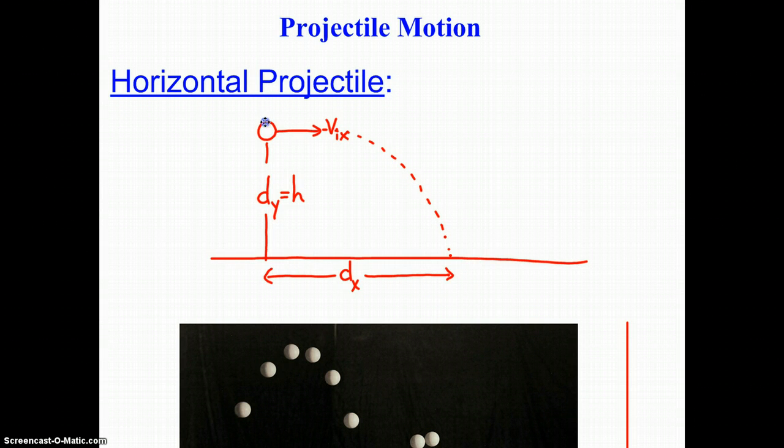The distance that it travels horizontally, we would call dx. And you will often hear this called range. So if you ever hear the term the range of projectile, that's the variable they're referring to.